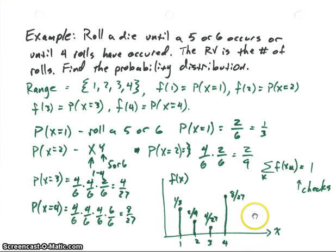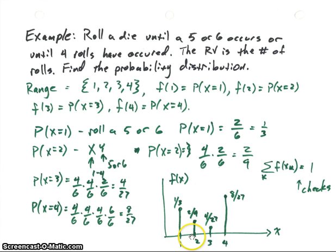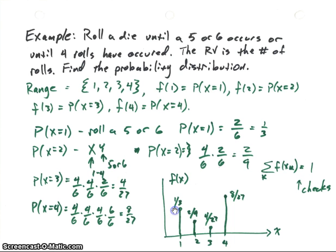Now I want to make a plot so we can see what the function looks like. For each of the range values 1, 2, 3, 4, I'll draw a line up indicating the value of the function at that point. The first was 1/3, the second 2/9, the third 4/27, and finally 8/27. I'll plot that as a function of x.